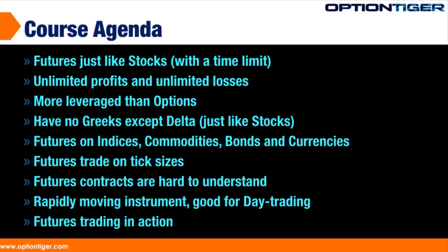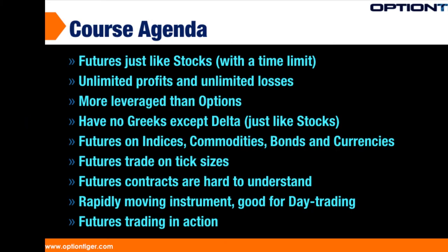Other commodities like gold, for example, have a futures contract that expires every month. You'll see differences like that depending on what kind of instrument and underlying asset you're looking at. It trades just like stocks — you have unlimited profits on the upside and unlimited losses on the downside. Futures are also more leveraged than options, and we'll be looking at all of these issues as we go into part 2.